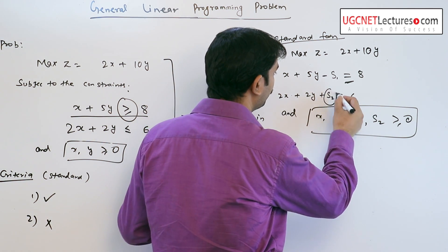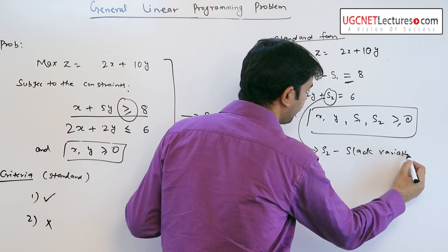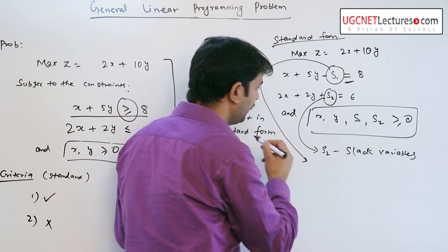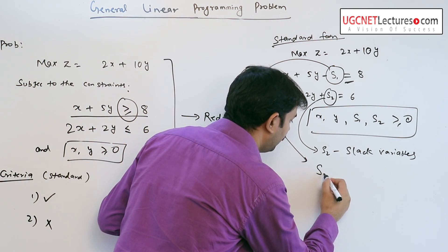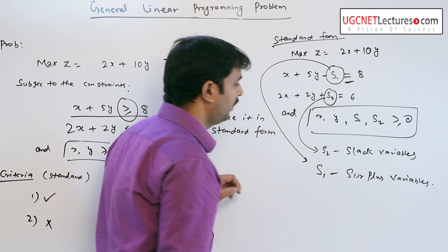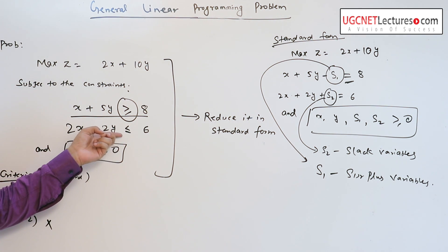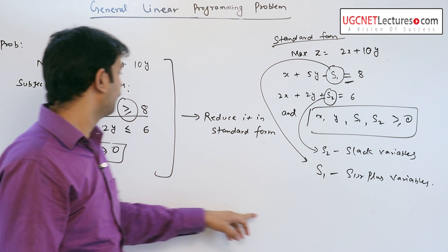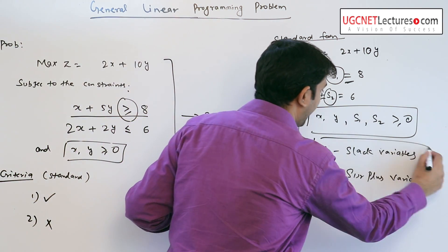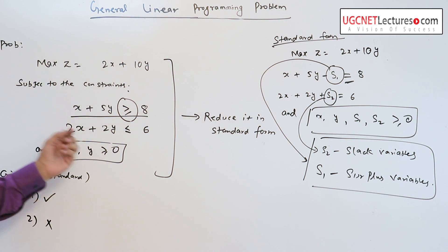Here, S2 is a slack variable since it has a positive sign. S1 is a surplus variable. Slack variables are always introduced when the inequality is less than or equal to, and surplus variables are introduced when the inequality is greater than or equal to. This is the distinction between slack and surplus variables, and this is how we reduce a general linear programming problem to its standard form.